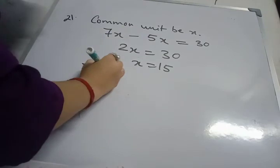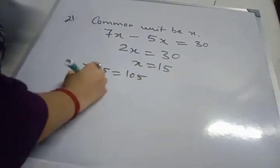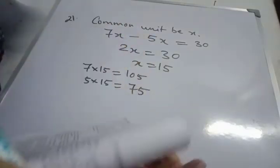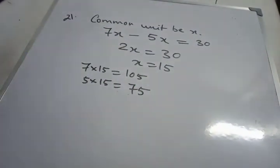So 7 into 15 is one of the number that is 105. And 5 into 15 is the other number that is 75. Okay. Next sum.